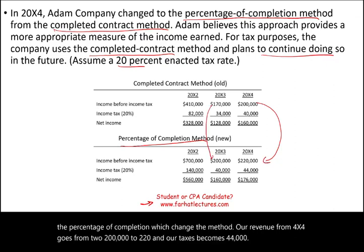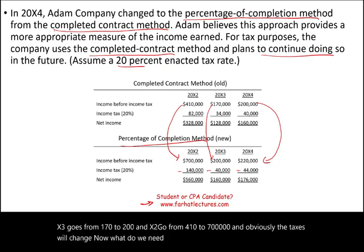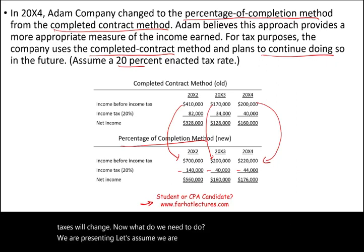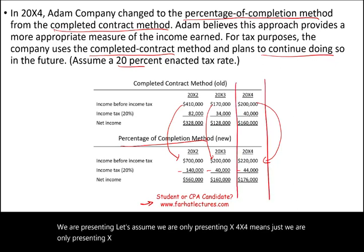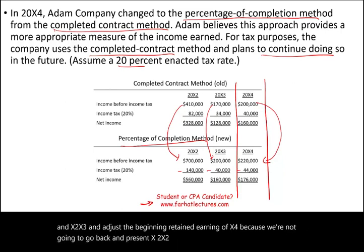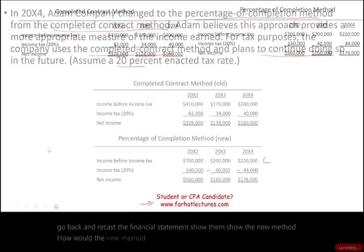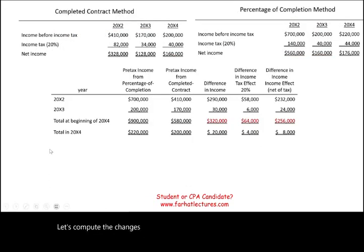Under the new method — the percentage of completion — revenue for X4 goes from 200,000 to 220,000, and taxes become 44,000. X3 goes from 170,000 to 200,000, and X2 goes from 410,000 to 700,000, with taxes changing accordingly. Since we are only presenting X4, we need to compute the changes in X2 and X3 and adjust the beginning retained earnings of X4. If we were presenting prior years, we would go back and recast those financial statements.